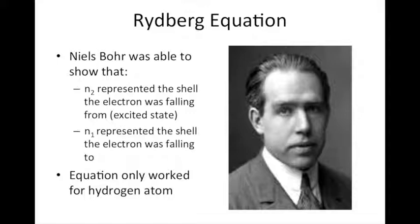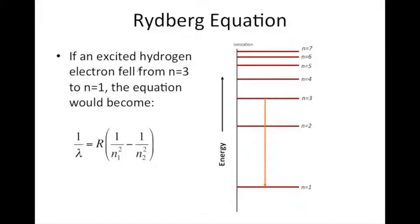So for example, if an electron fell, according to the Bohr model, if an electron fell from the third shell, n equals 3, and it fell down to the first shell, n equals 1,